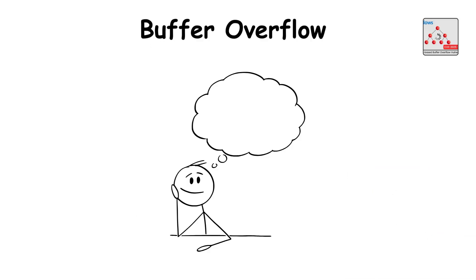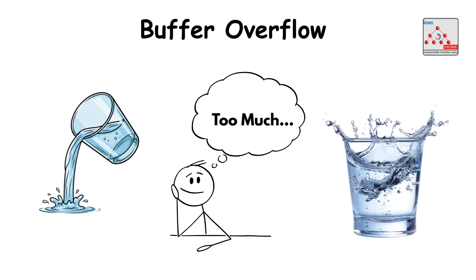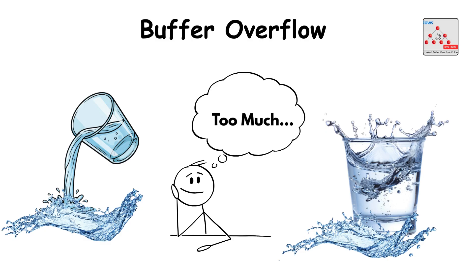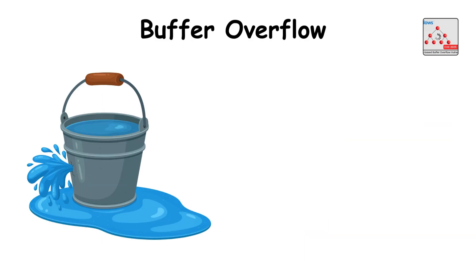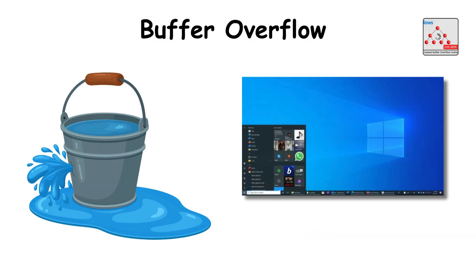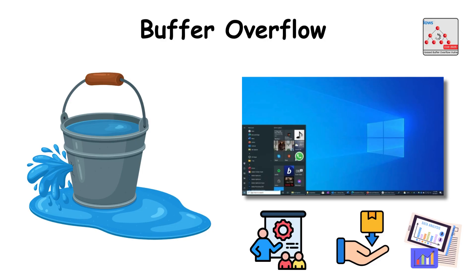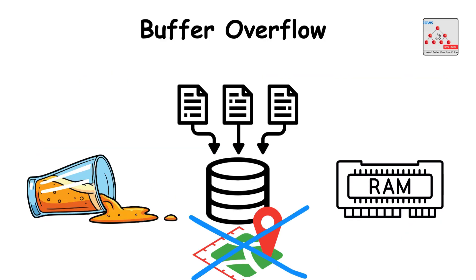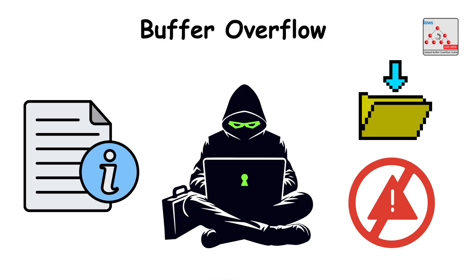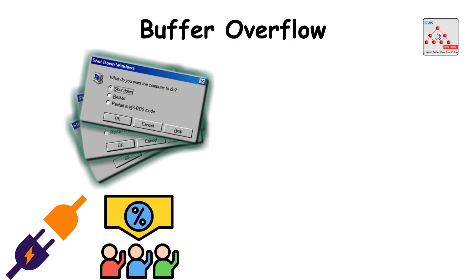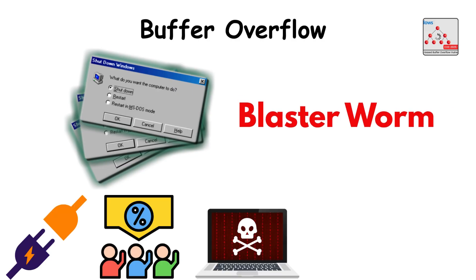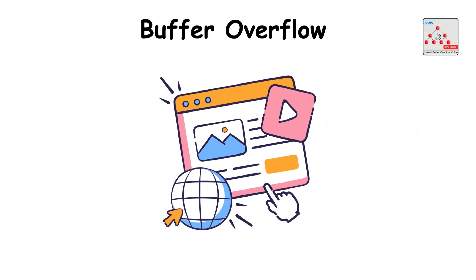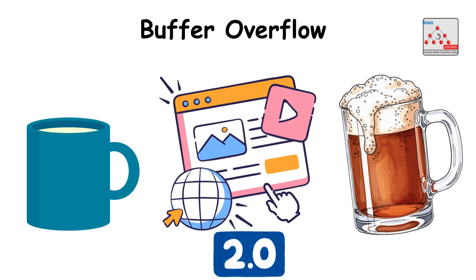Buffer overflow. Imagine pouring too much water into a glass until it spills everywhere. That overflow is exactly what happens inside Windows when a program receives more data than it can handle. The extra data spills into memory areas it should never reach, allowing attackers to insert harmful instructions. This flaw powered major attacks like the Blaster worm in 2003. It's the digital version of overfilling a container until something dangerous leaks out.